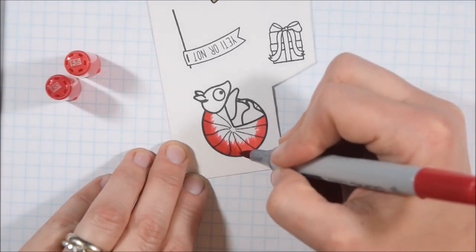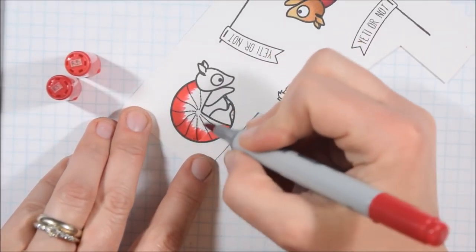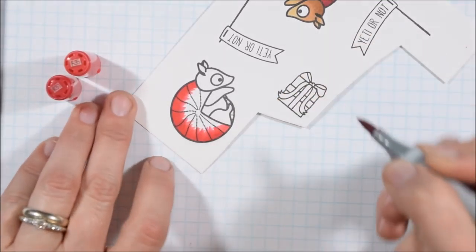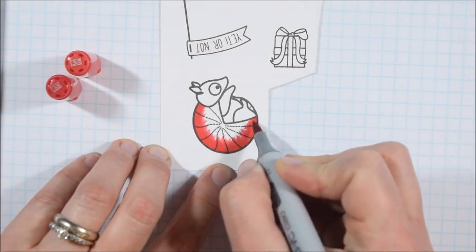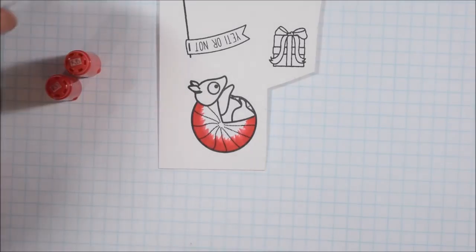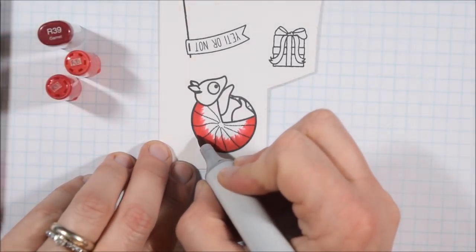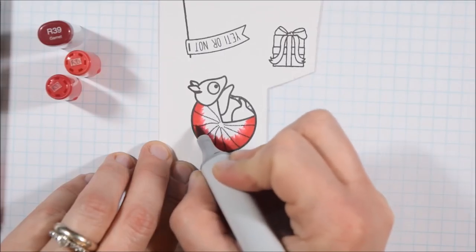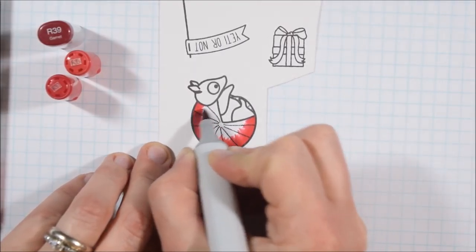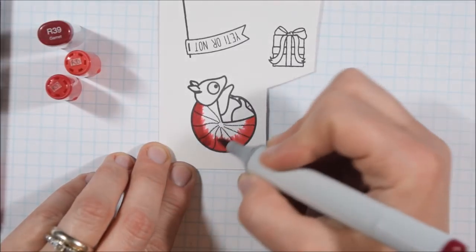I'm just going to pull it in some. I'm going around with flicking motions. I like to turn my paper as well to help me—I like to be flicking away from me. Some people prefer to flick towards them, it's just a better motion for them. I also tend to, if I'm coloring a small area, keep my markers open so I can switch from one to the other faster and easier. So I'm covering that same area with all three colors.